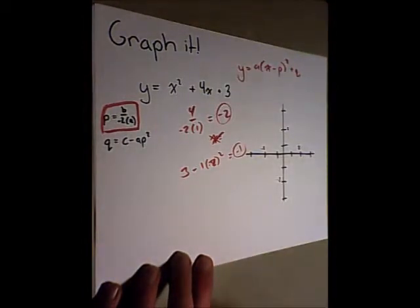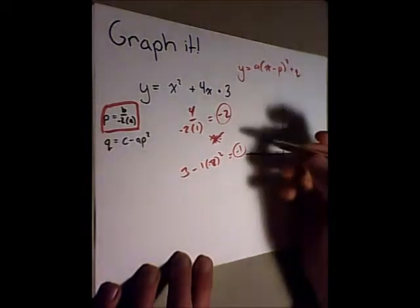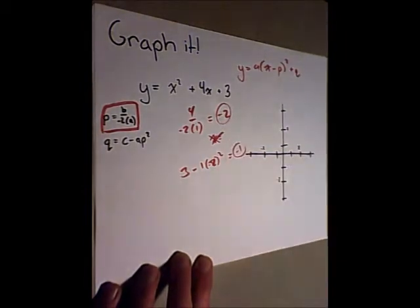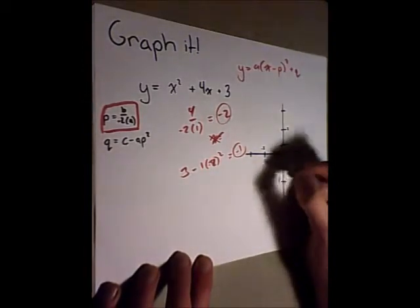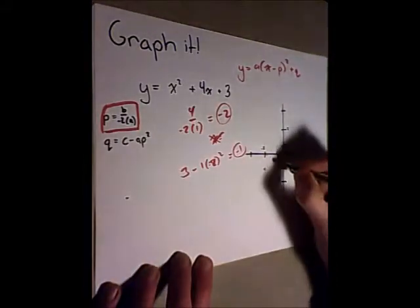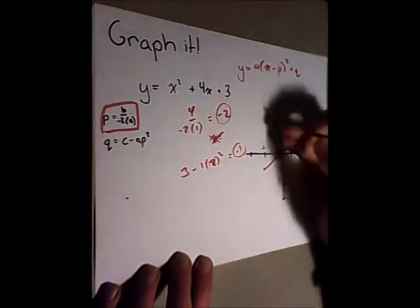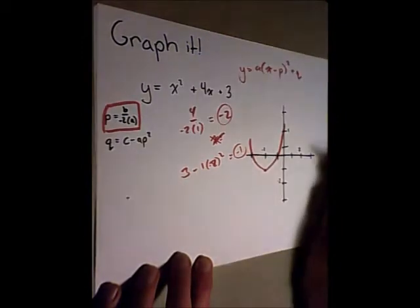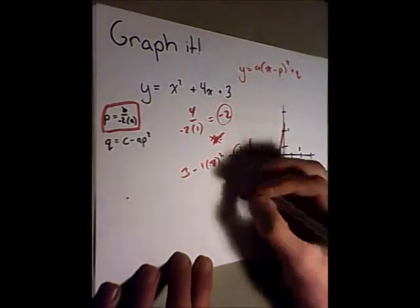So now that we know that our vertex is negative 2 and negative 1 we can find this point, the x value and the y value. And we just find this point and it's right there. And we know that the slope is 1 so it'll increase. And this will be the next point where the graph hits. So the parabola will end up looking somewhat like this.